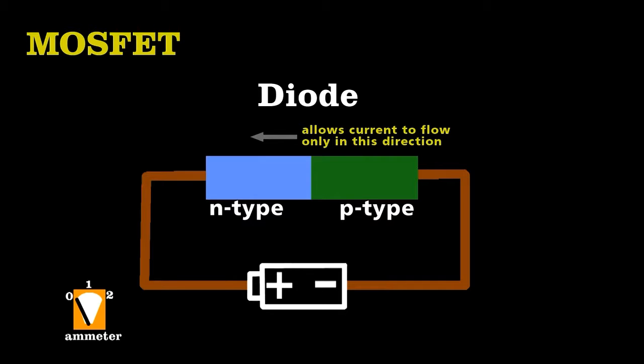Flip that battery, and the flow of charge stops. Now to build a MOSFET, we take two such diodes and put them together so that each is reversed.